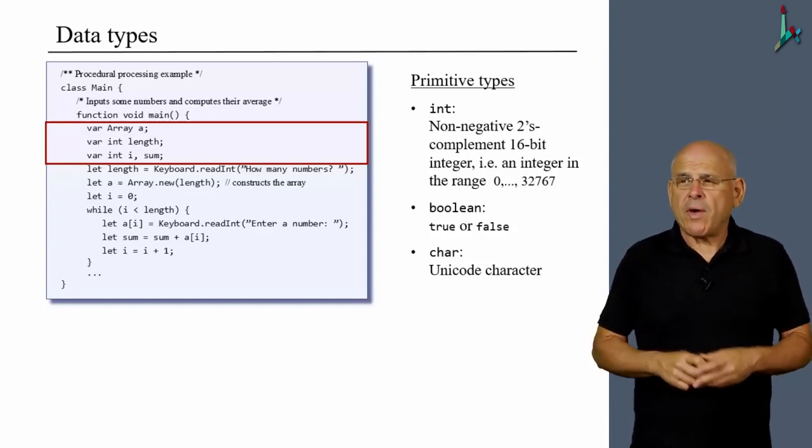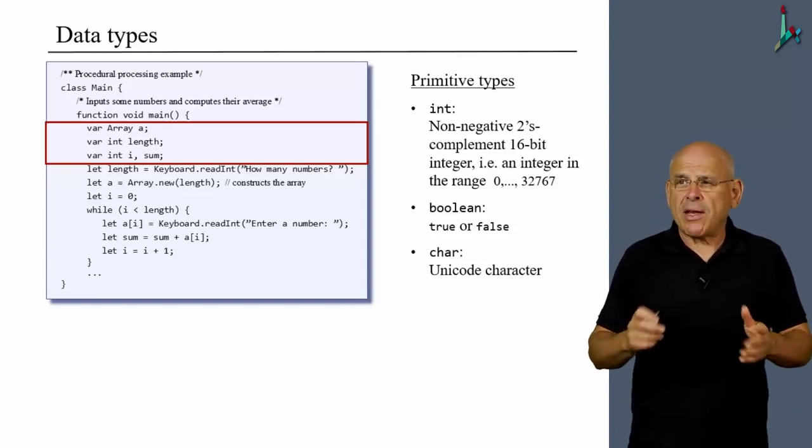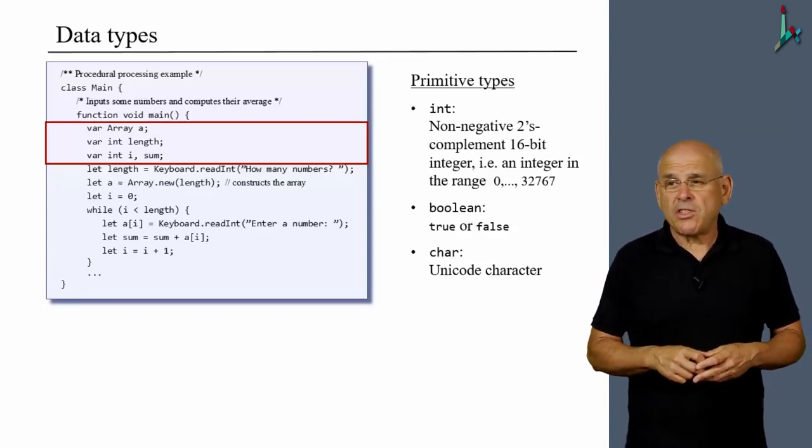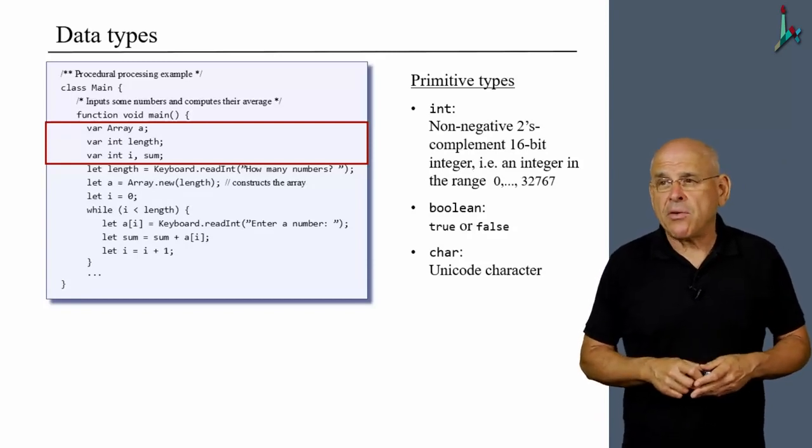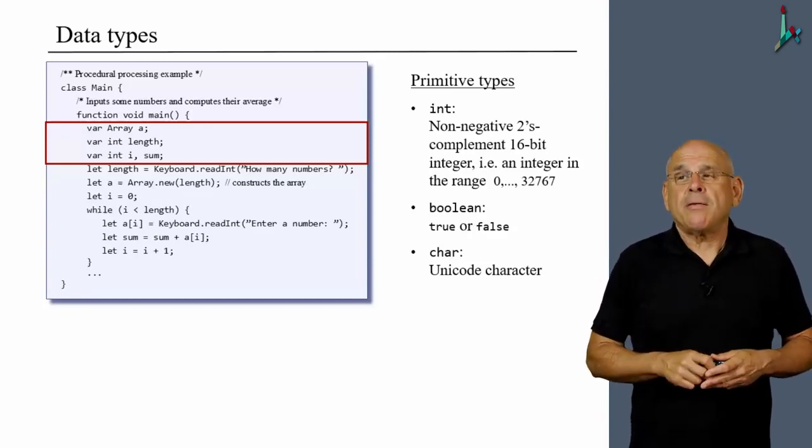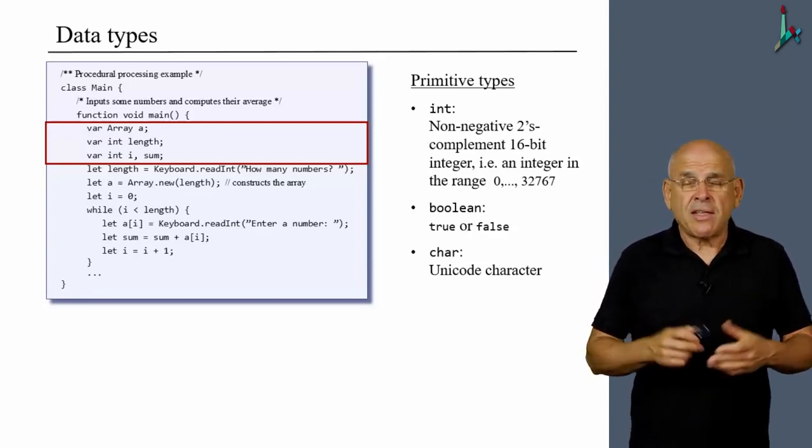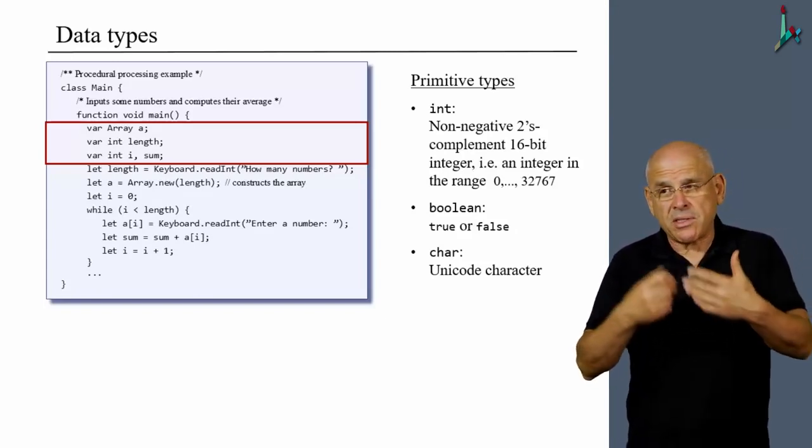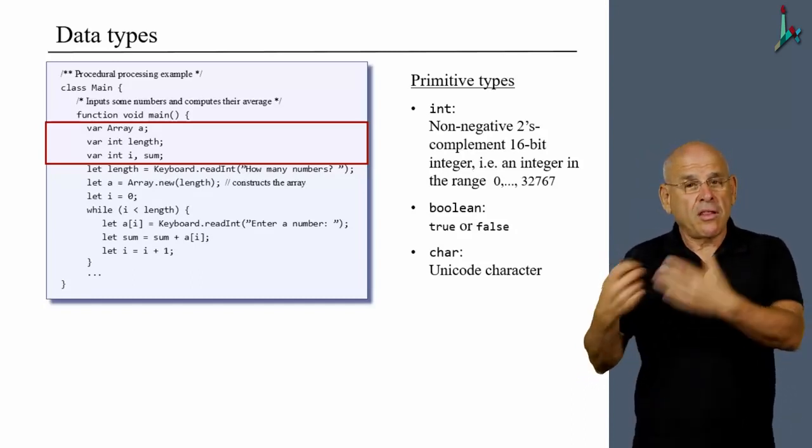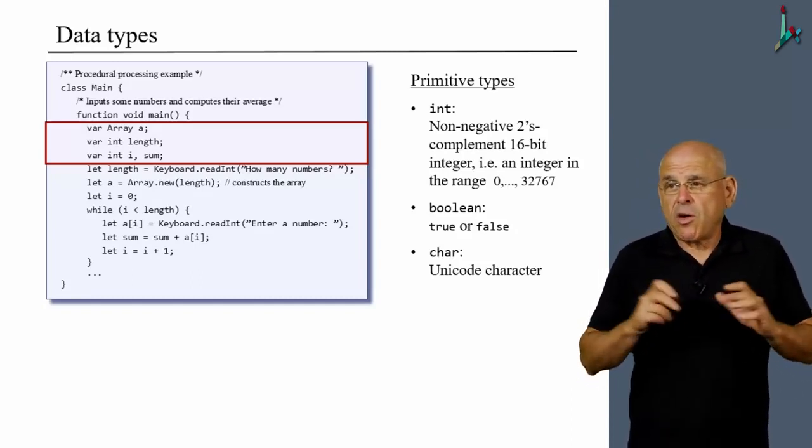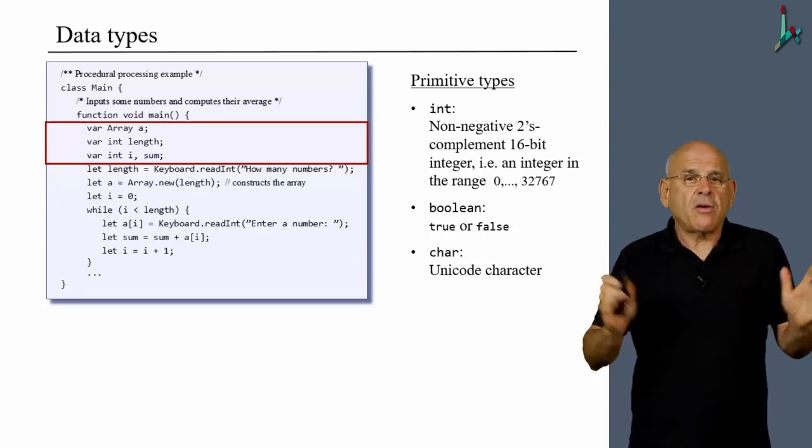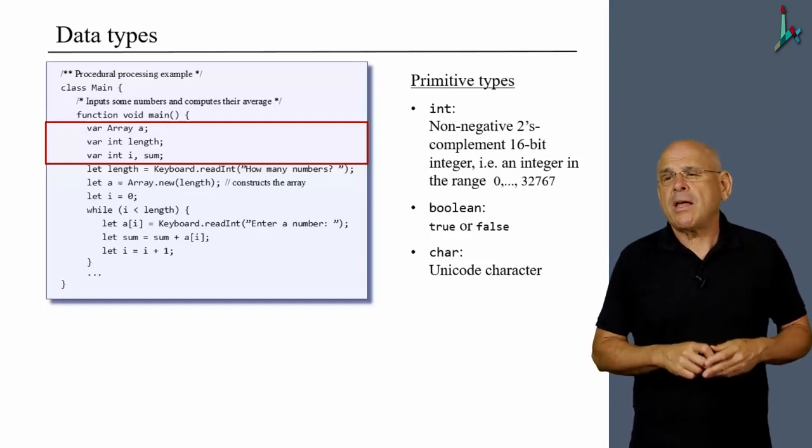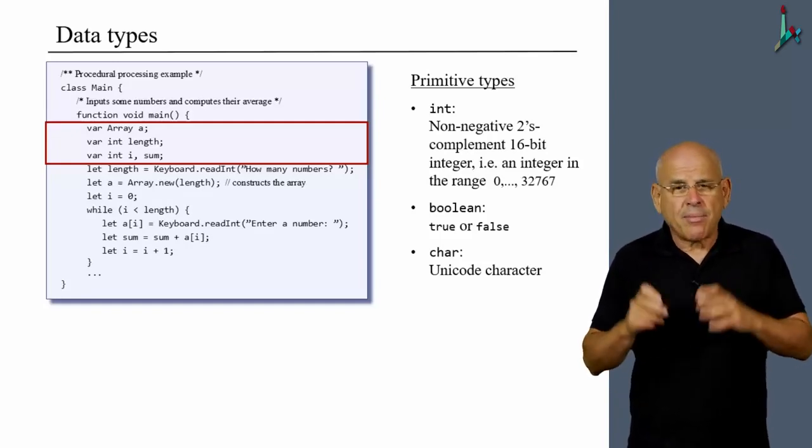Now, you may ask yourself, if an int value can be only non-negative, how do I represent negative numbers in Jack? Well, you can always precede a value with a minus, but this will not be a constant. It will be actually an expression in which we apply the minus operator to the non-negative value that follows it. So from the programmer's perspective, negative numbers are just as easy to use as positive ones, but the implementation is a little bit more involved.